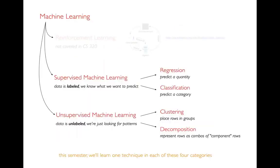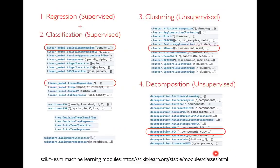That's a whirlwind tour of the four problems: regression and classification are both supervised because data is labeled; clustering and decomposition are unsupervised — no column we're trying to predict. For each of these four categories, there are tons of different algorithms in scikit-learn — probably close to hundreds. We won't have time to learn all of them. We'll just learn one algorithm per category: k-means clustering for clustering, and PCA for decomposition.